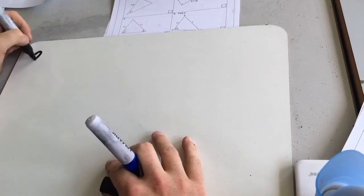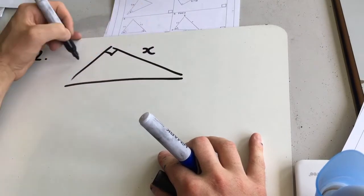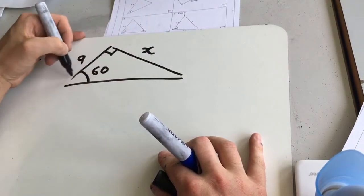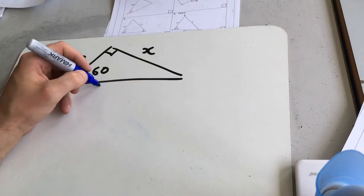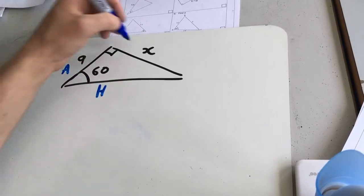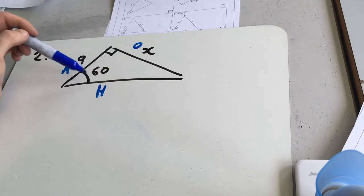Alright, question 2. So we've got another right angle triangle, so it's got to be SOHCAHTOA or Pythagoras. Again, we've got two sides, one angle, so it's got to be another SOHCAHTOA question. So let's label everything up. We've got the hypotenuse there, the adjacent and the opposite. So this time we have the opposite, the adjacent and the angle. So it's going to be tan this time.